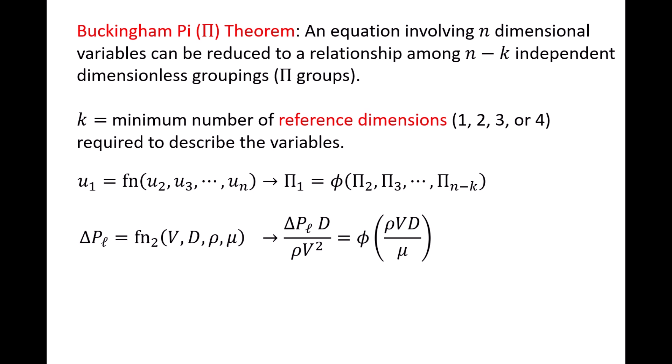Our dependent variable, delta PL, only appears in the pi1 term. In a later video, we will demonstrate that two pi groups are required because three reference dimensions are needed to describe the variables, that is, k equals 3.